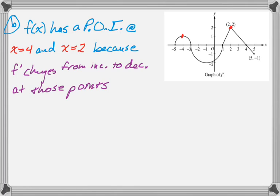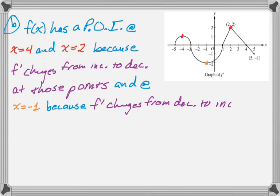And there's one more place where f of x has a point of inflection, and that would be at a relative minimum of f prime. So that will be at x equals negative 1. And my reason for that would be that f prime changes from decreasing to increasing at that value. So that's part b.